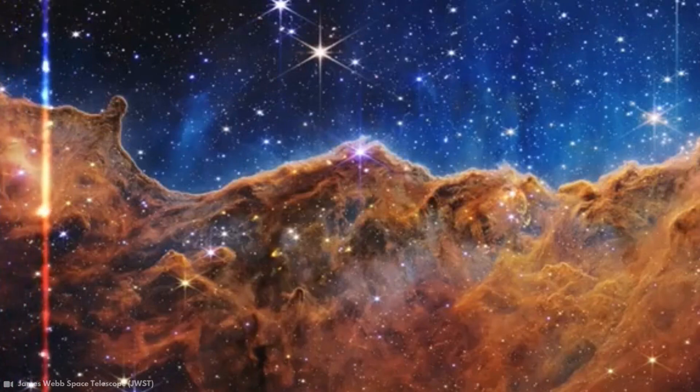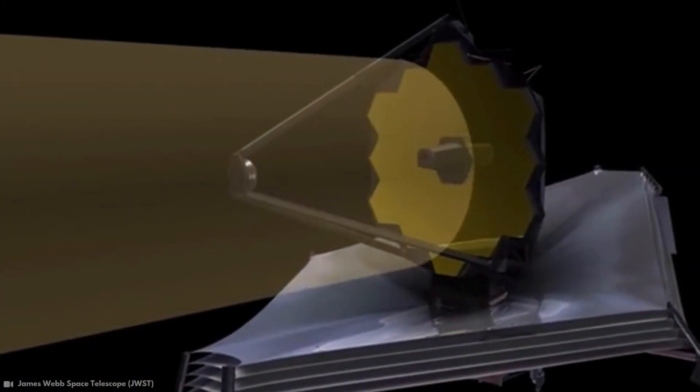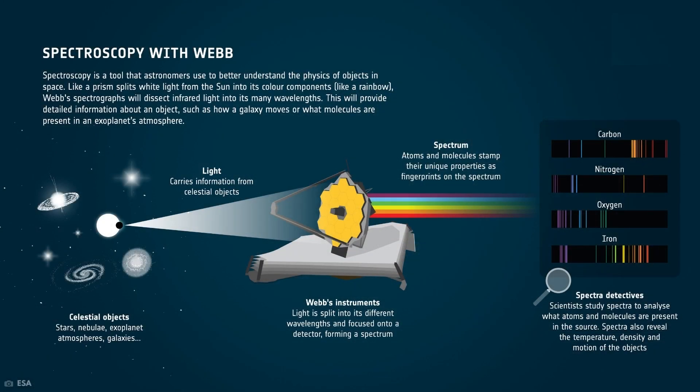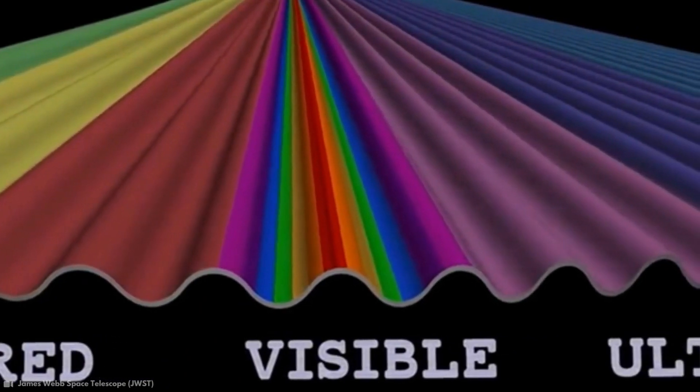The James Webb Space Telescope is a space telescope for infrared astronomy. Webb obtains raw data using advanced instruments. Then the raw data obtained by Webb are transformed into a form that our senses can perceive.